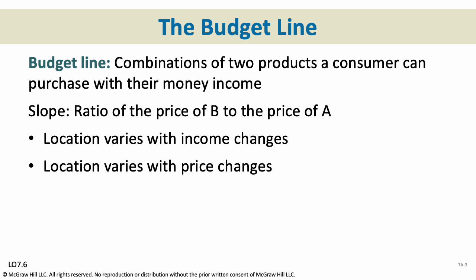A budget line is the combination of products that a consumer can buy with their income. We're going to look at a two-product budget line here, looking at product B and product A. The slope is the ratio of the price of B to the price of A, and location varies with income changes and price changes.